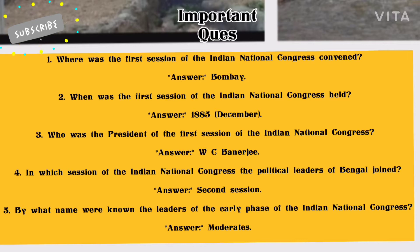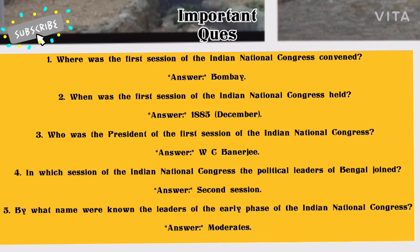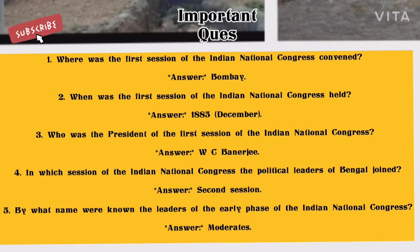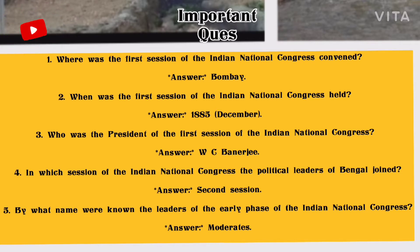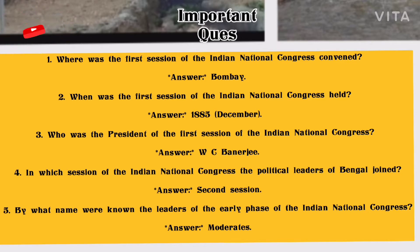Number 1: Where was the first session of Indian National Congress convened? Answer: Bombay. Number 2: When was the first session of Indian National Congress held? Answer: December 1885. Number 3: Who was the president of the first session of Indian National Congress? Answer: W.C. Banerji.